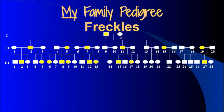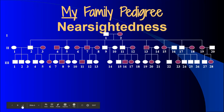Family pedigrees can also be used to track traits, and you do that by shading in individuals. On this pedigree, everyone with freckles in my family has been shaded in yellow. Another trait that runs in my family is nearsightedness, and in this case everyone who is nearsighted has been shaded in purple.